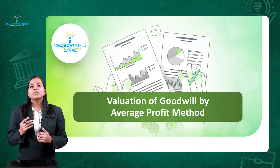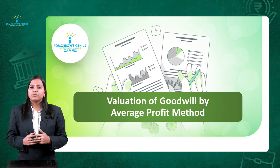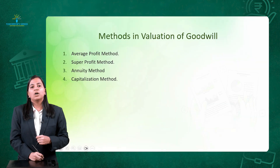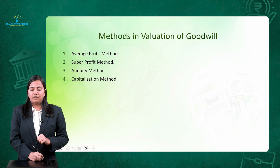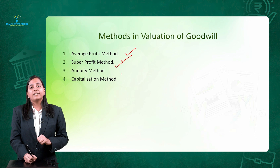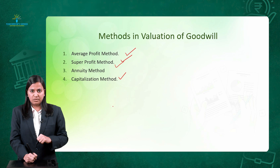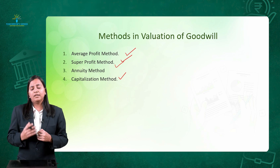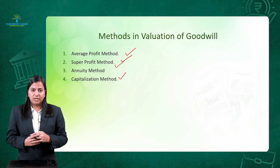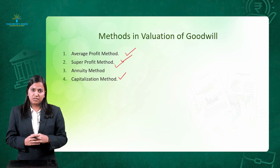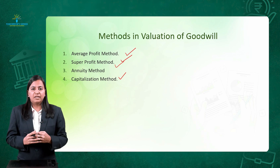Let's start with the methods of goodwill. In this video, I am going to cover the first method of calculating goodwill, that is the average profit method. We have four methods to calculate goodwill: average profit method, super profit method, annuity method, and capitalization method. The first one we are going to cover is the average profit method. It is the most simplest method used by an organization.